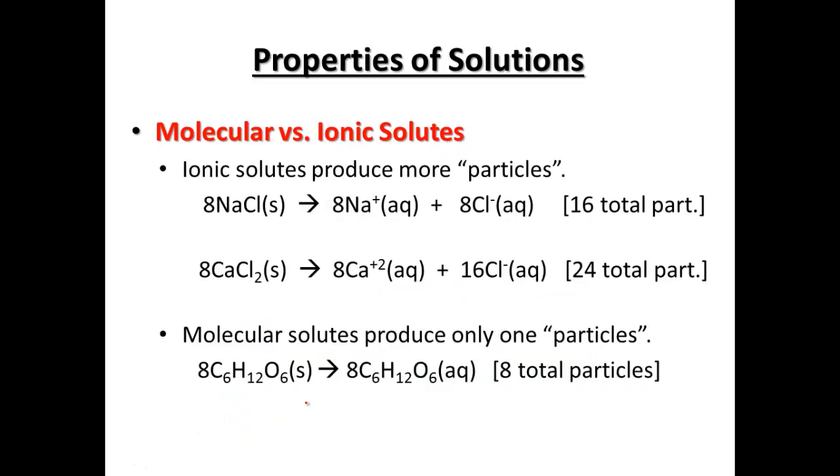And then if we continue that idea, sticking with ionic, sodium chloride gets us 16 particles. Calcium chloride, CaCl2, gets us eight calciums. Then we get that two here. We actually end up with 16 chlorines or 24 total particles. And again, the glucose, we started out with eight as a solid. And we have eight when it becomes aqueous or dissolved in water. So we only get eight particles from there.